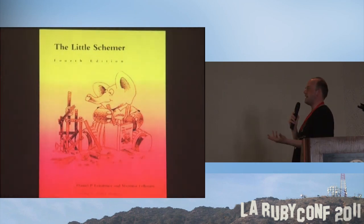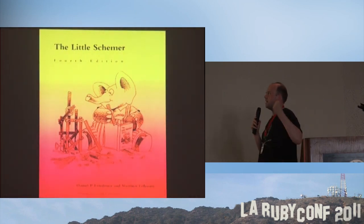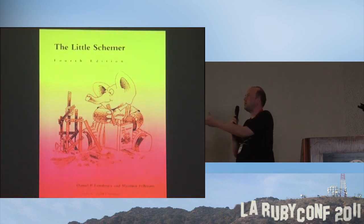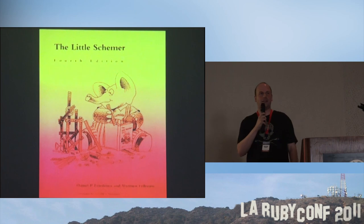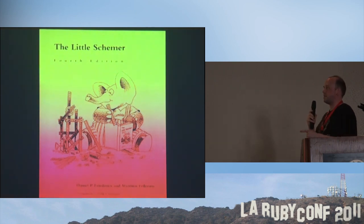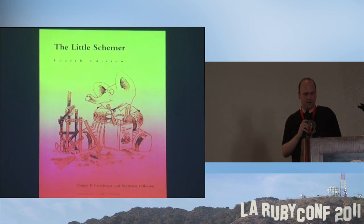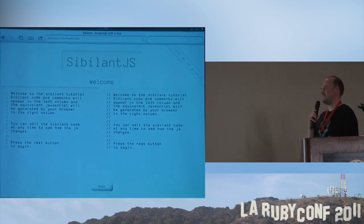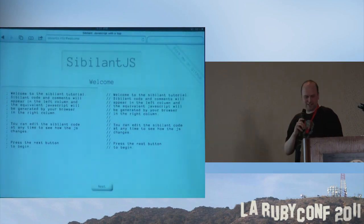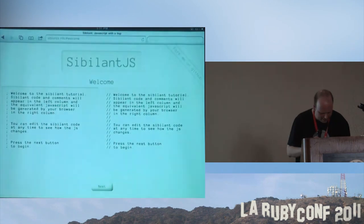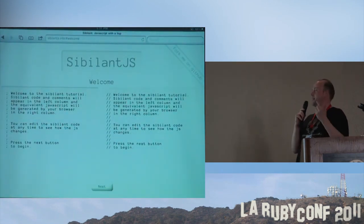If you're a classicist or a purist and want to find out from the source, this is one of the best books on Scheme ever — it's been in print from about 1952 onward, which is impressive because I don't think they actually discovered Lisp until 1959. Sibilant.js is really great.